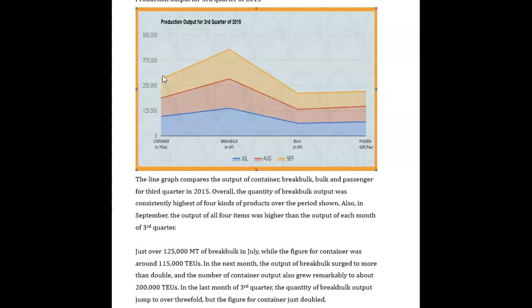I would probably say that in the third quarter, break bulk had the highest output of the four, with a total of approximately 425,000. It was followed by container with roughly 300,000, and both bulk and passenger each had around 225,000. That's probably what I would do.